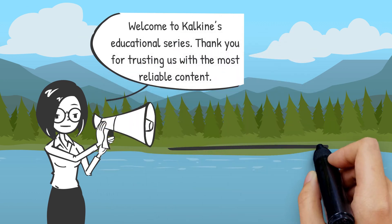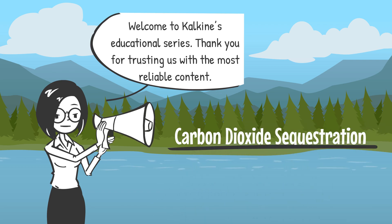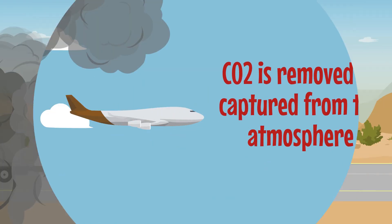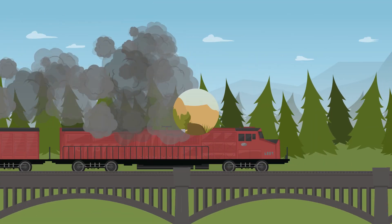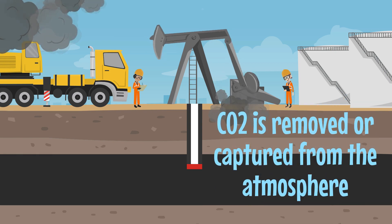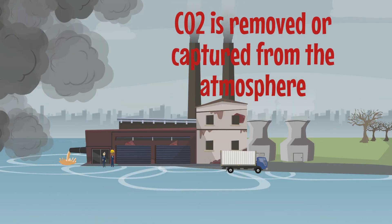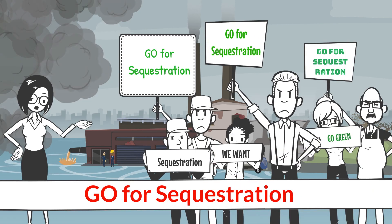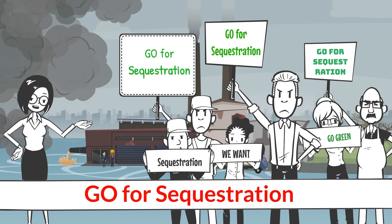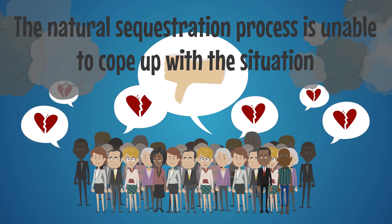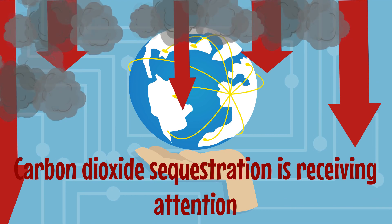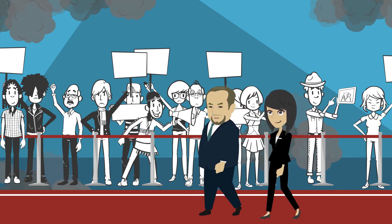Today's topic is carbon dioxide sequestration. CO2 sequestration is the process by which carbon dioxide is removed or captured from the atmosphere to lower the effect of global warming. Sequestration is a natural phenomenon; however, the rate of CO2 generation has surged sharply and the natural sequestration process is unable to cope. Carbon dioxide sequestration is receiving considerable attention since most countries are working on cutting their carbon emissions.